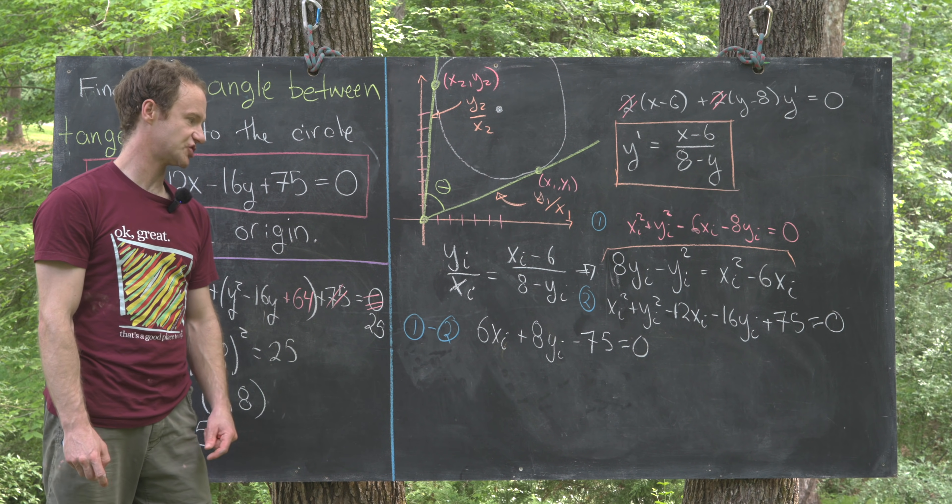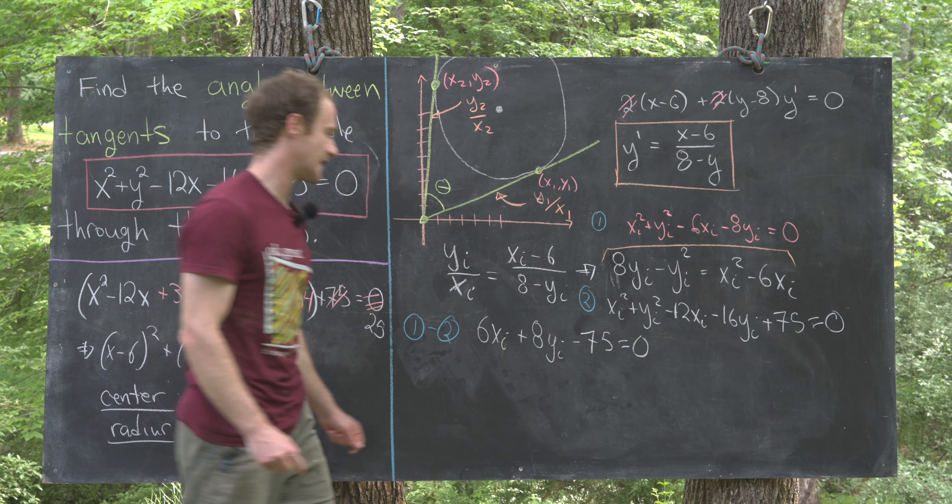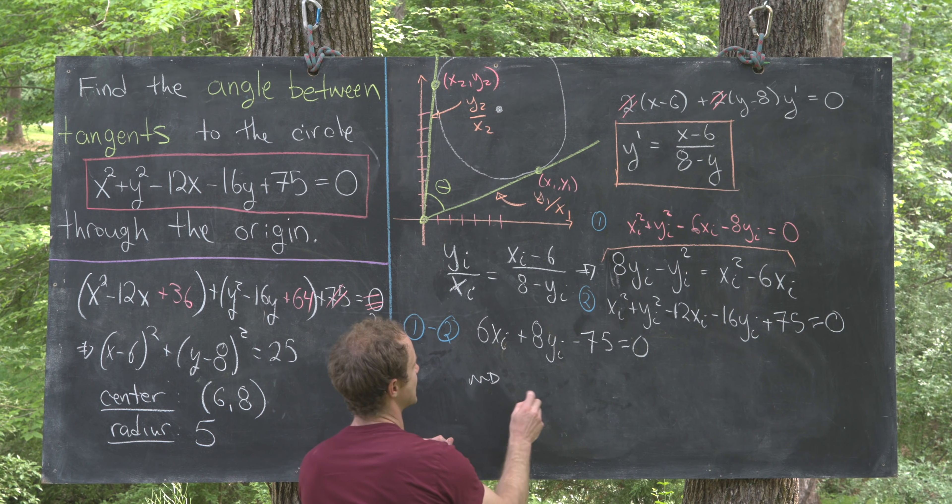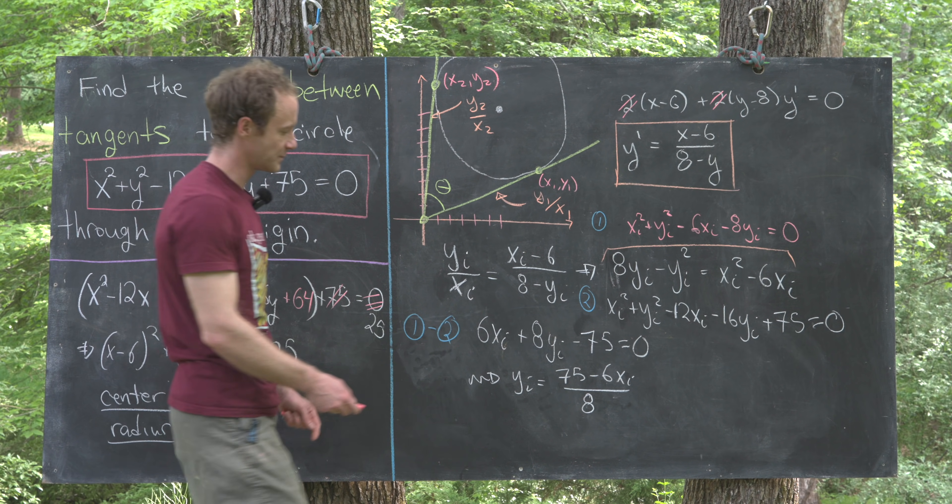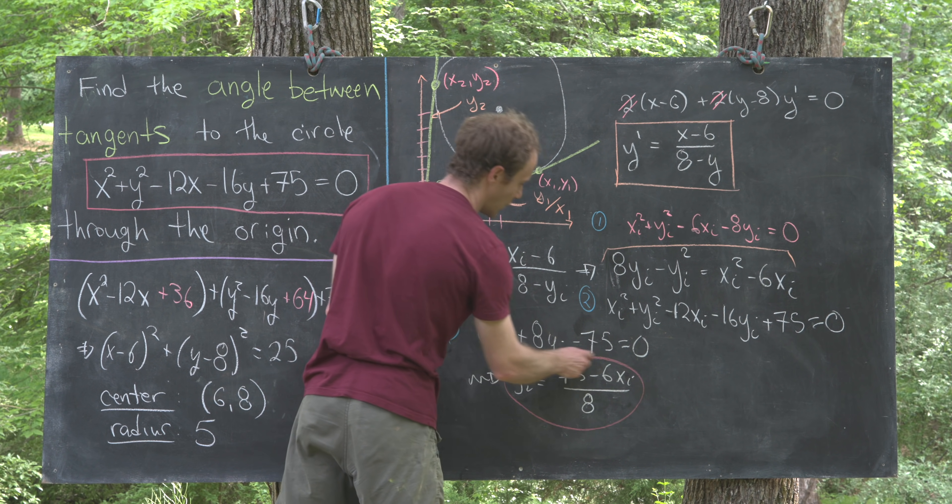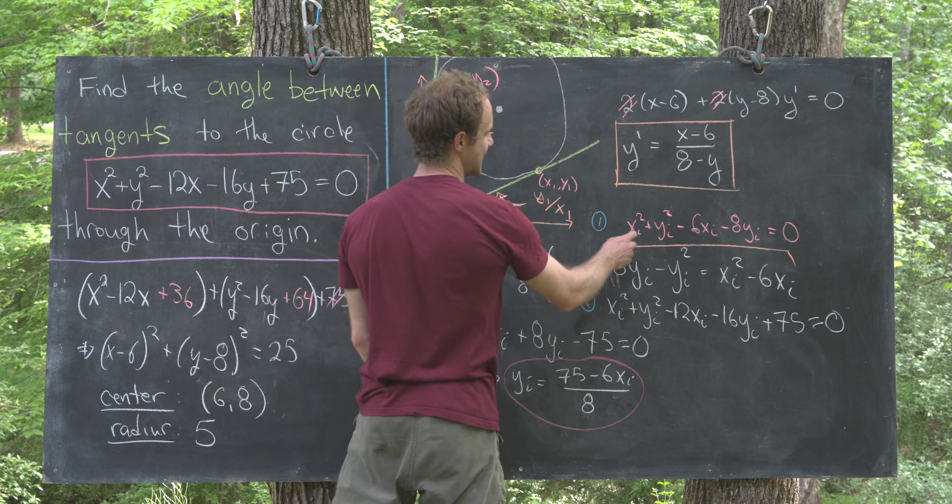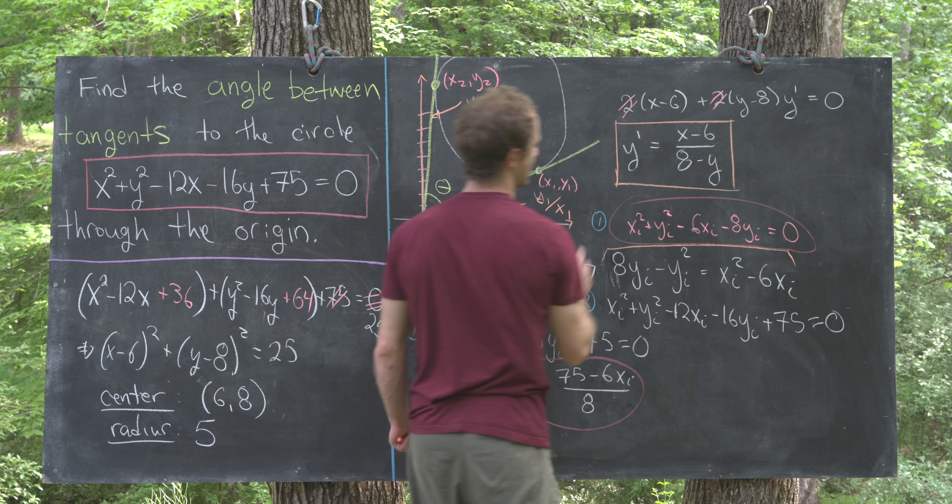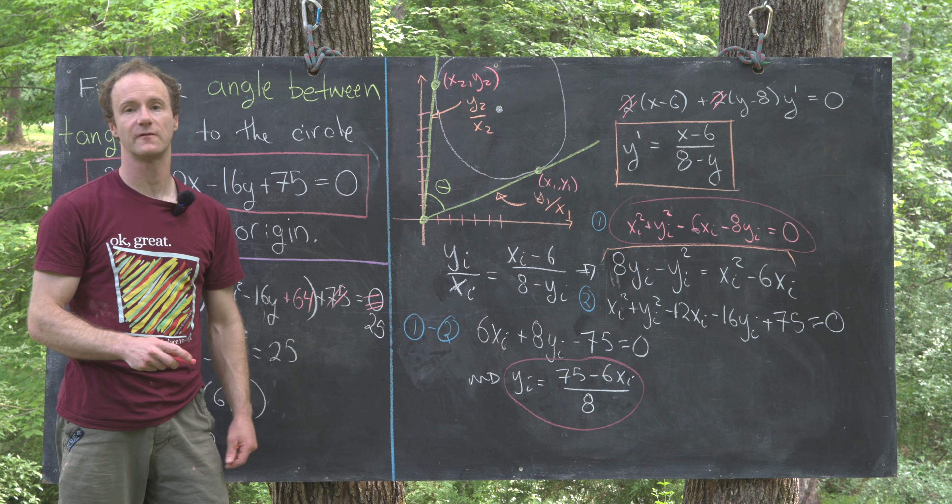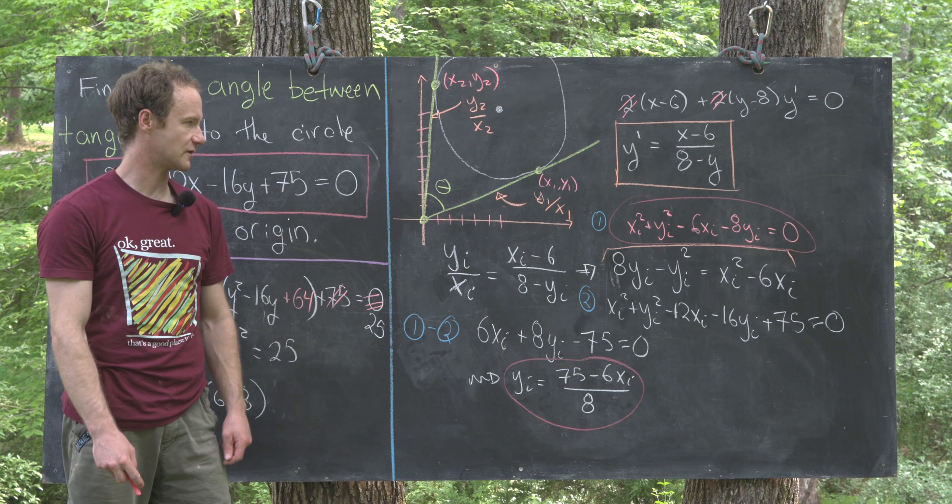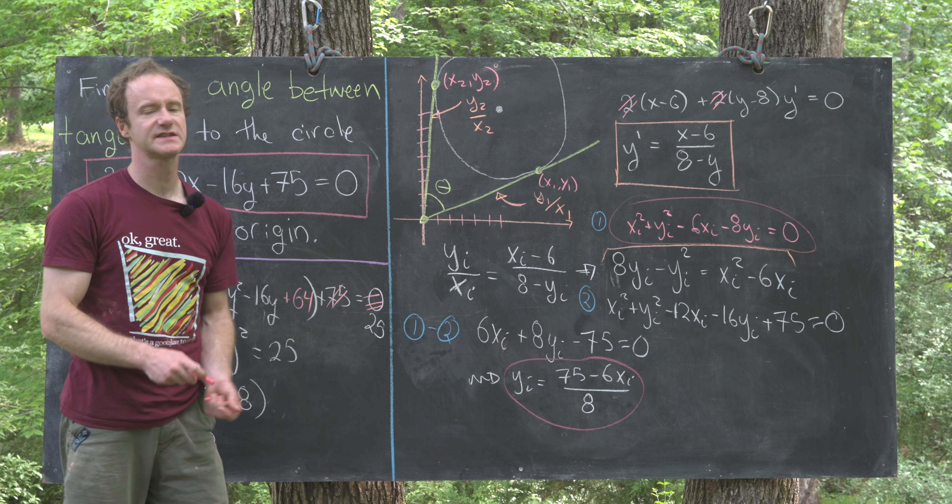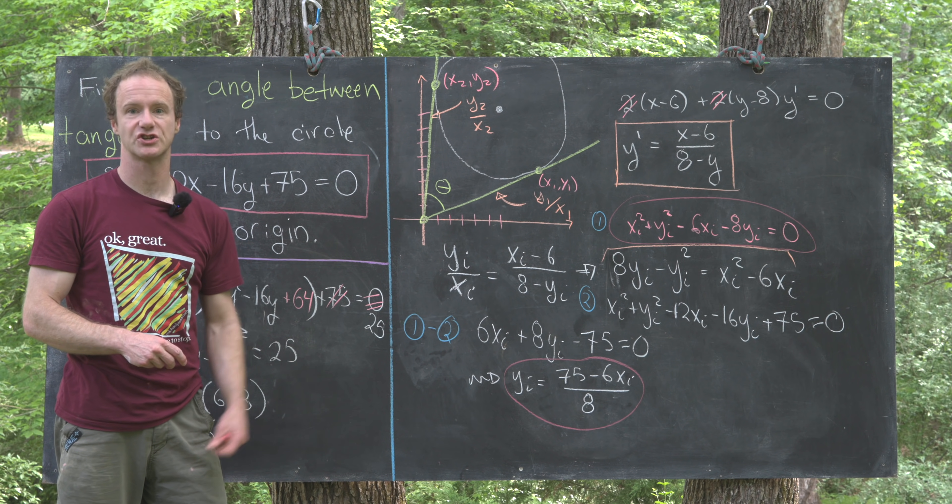Now notice that's a linear relationship between xi and yi. In fact, we get that yi is equal to 75 minus 6xi over 8. We can take this expression for yi and plug it into this polynomial, and then we'll have just a quadratic polynomial for the variable xi. Then we can solve that quadratic polynomial.